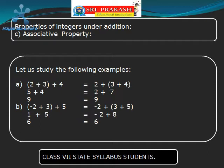Let us take one more example. Let us take minus 2, 3, and 5. Taking minus 2 and 3 as a group and adding, the sum will be 1. To that let us add 5. The sum will be 6. Now what we did: we have taken 3 and 5 as a group. The sum will be 8. To that let us add minus 2. The end result will also be 6.